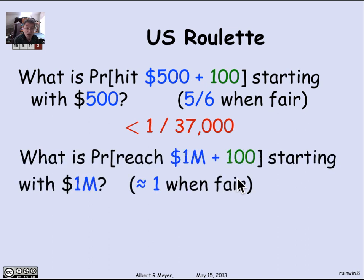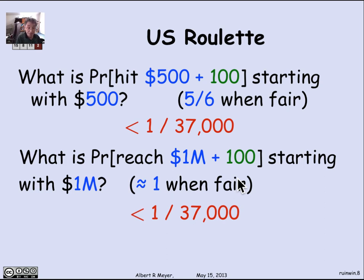You're almost certain to go broke. Suppose you had an initial stake of $1 million and all you wanted to do was win $100. In the fair game, this is almost certain. But in this unfair game — only slightly unfair per bet — it's still one in 137,000 that you will win. In fact, it doesn't matter how much money your initial stake is; the probability of winning just $100 more remains one in 137,000, which is dramatically unintuitive and surprising. We'll prove that shortly.